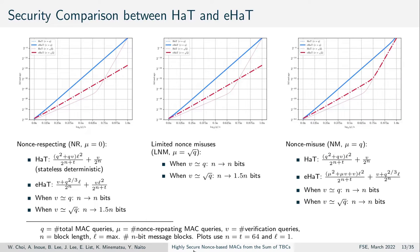For hash-as-tweak, the bound is limited by total (n+t)/2 queries and does not profit from nonces at all. The security of extended HAT depends on the number of nonce-repeating MAC queries and on the number of verification queries.